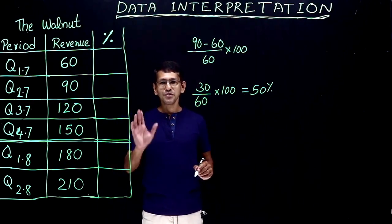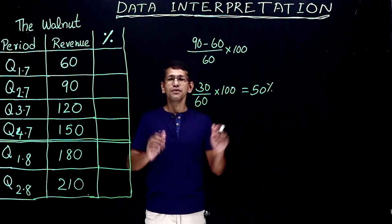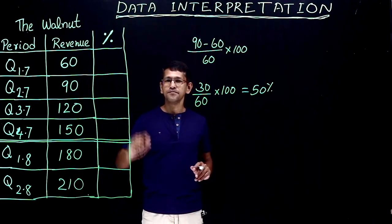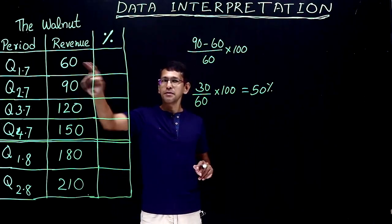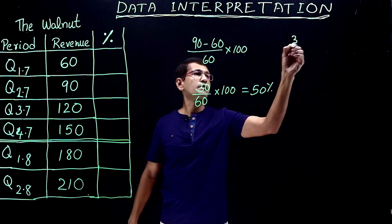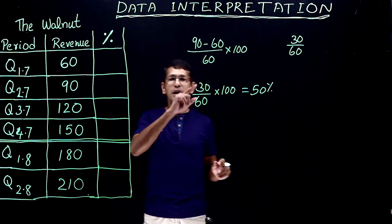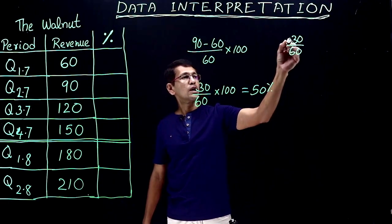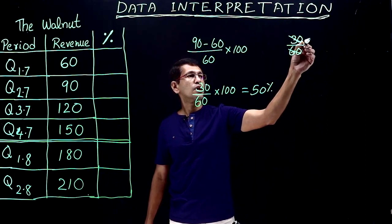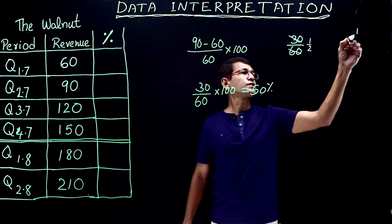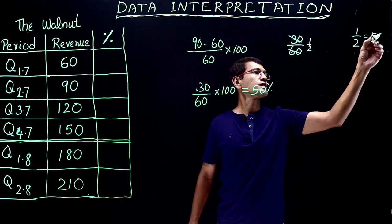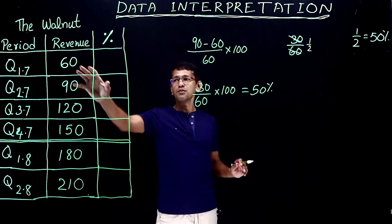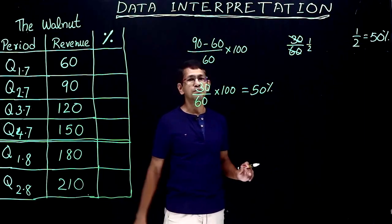However, in actual data interpretation calculations, this is not the method we use. I'll show you: 60 to 90, the increase is 30. Take the base year, which is 60. So 30 by 60 equals 1/2. Every time you get a figure of approximately 1/2, convert that to 50 percentage.